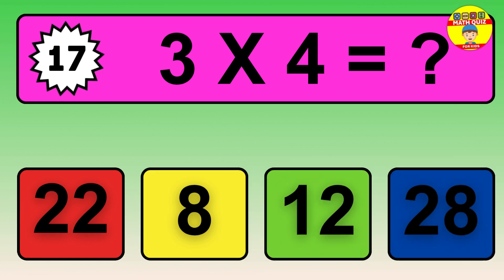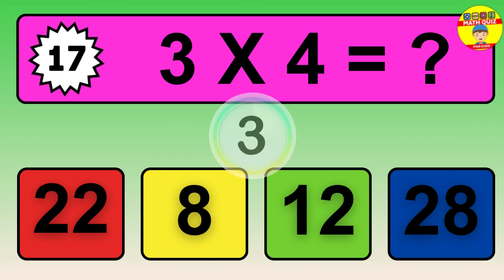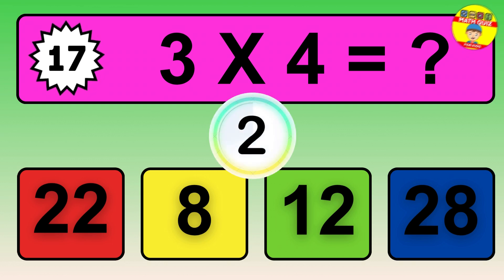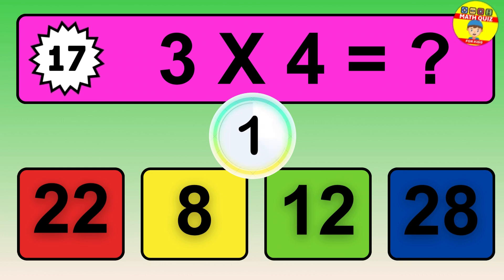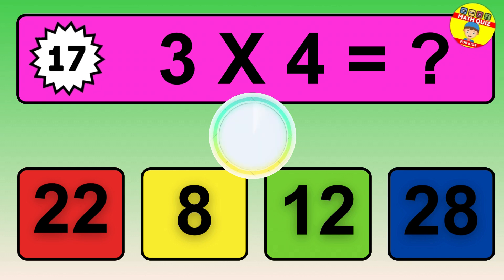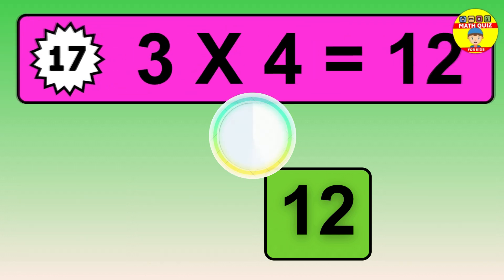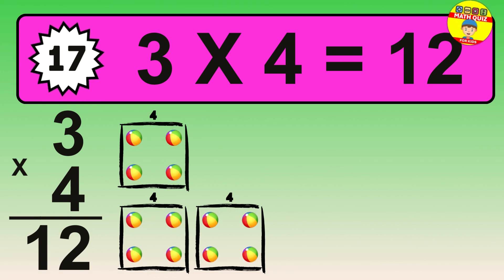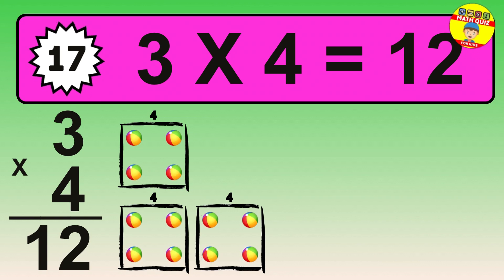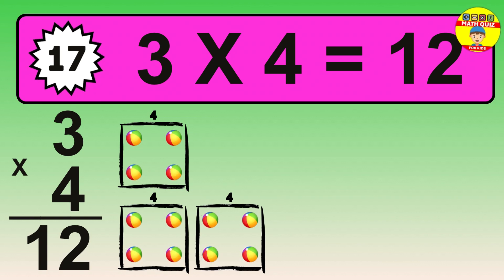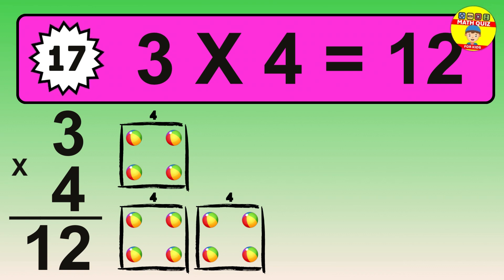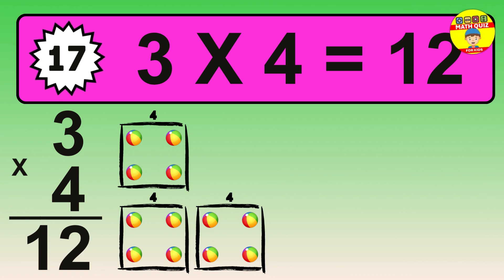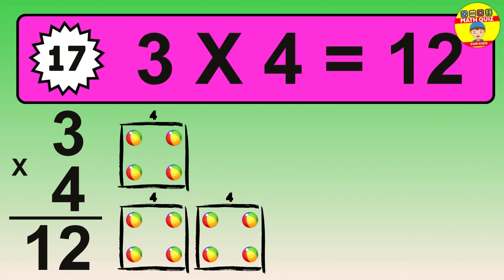Question 17. Three times four equals what? So the answer is three times four is twelve. To calculate, we have three groups with four balls each one. So how many balls do we have? Twelve balls.